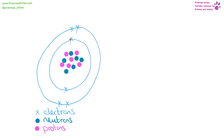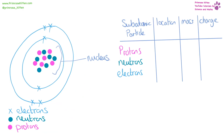Here we have the structure of an atom. We have electrons on the shells around the outside, protons in the middle, and neutrons also in the middle. This bit in the middle is collectively called the nucleus. Protons are in the nucleus — mass of one, charge of plus one. Neutrons are also in the nucleus — mass of one, charge of zero. Electrons are in the outer shells — mass of one two-thousandth, charge of minus one.